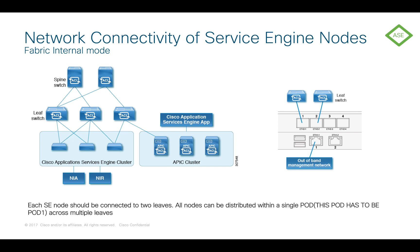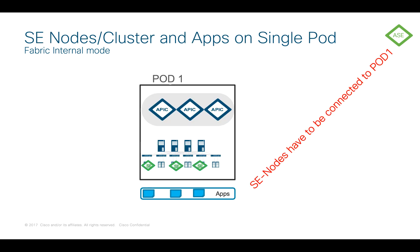Let's look at how we actually connect this cluster to an existing ACI Fabric. On the screen you can see the APIC cluster attached to the fabric as usual. On top of APIC, you need to install a small app called the Service Engine App. Connecting the Service Engine Cluster is almost identical to how you connect your APICs directly to the Leafs in your ACI Fabric. You'll take the two 10/25-gig ports and connect them up to a couple of Leafs on each node. There is also an out-of-band management port that you must connect, and optionally a CIMC port for hardware-level UCS server access.